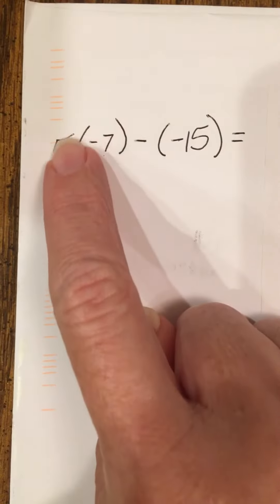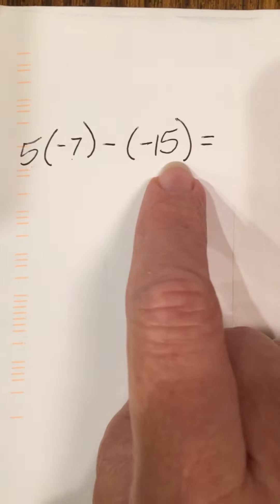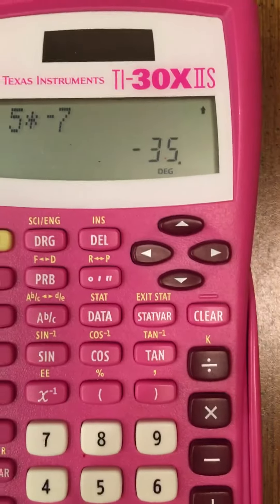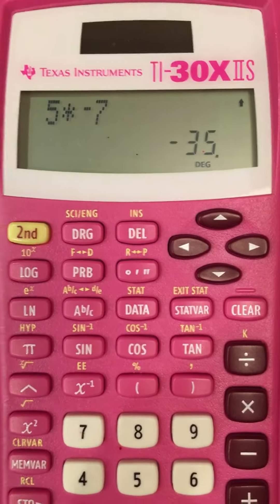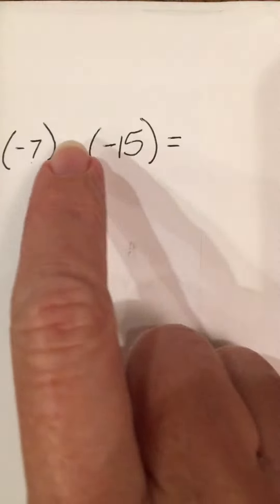Now what you're going to do is take the answer from this piece and subtract negative 15 from it. So if I have 5 times 7 already in the calculator or negative 35, what I can do is just go ahead and hit the subtract.